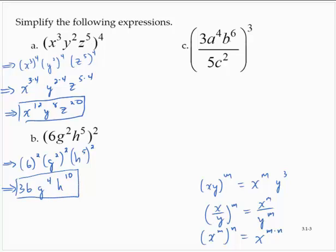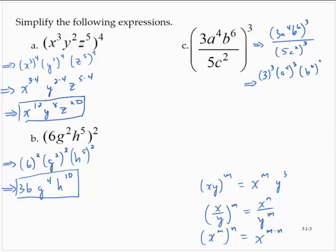Here we have a quotient to a power, so I would raise the numerator to the power and the denominator to the power. Then, using the rule we've already talked about, I would raise each factor to a power: 3 to the 3rd, a to the 4th to the 3rd, b to the 6th to the 3rd, over 5 to the 3rd, c to the 2nd to the 3rd. Simplifying gives 27, a to the 12th, b to the 18th, over 125, c to the 6th.